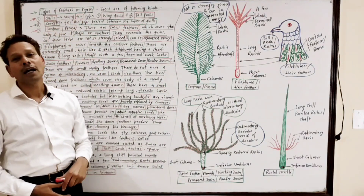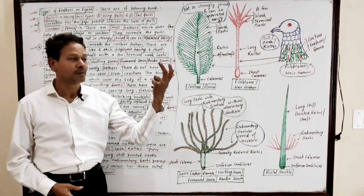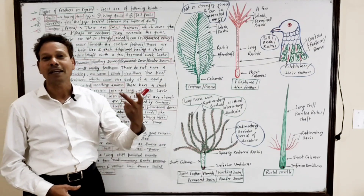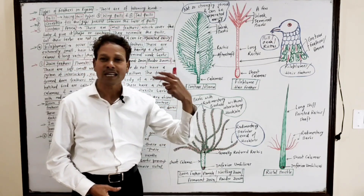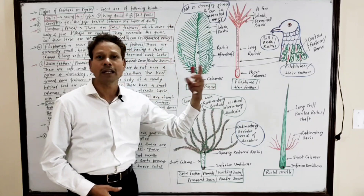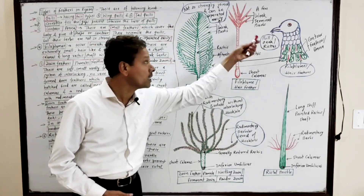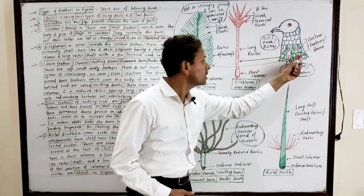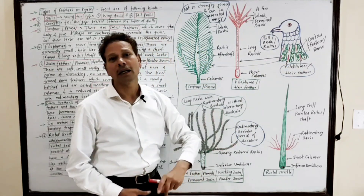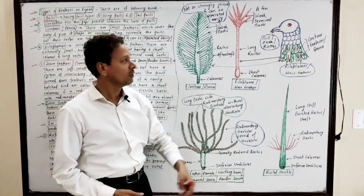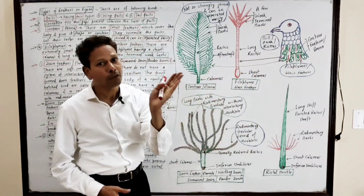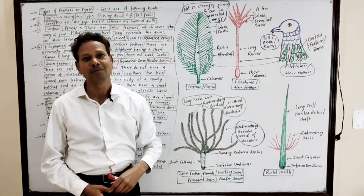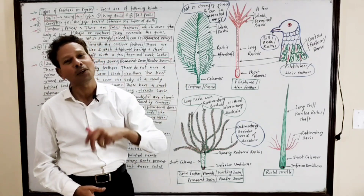The third type is contour or pinna feathers. As the name indicates, these contour feathers are present all over the body surface. They cover the body surface to provide shape and contour to the body.